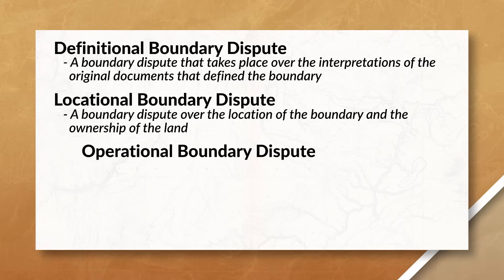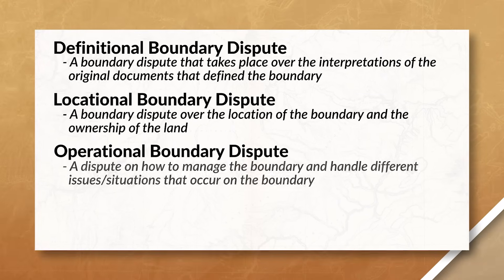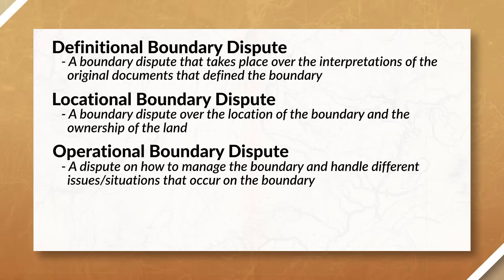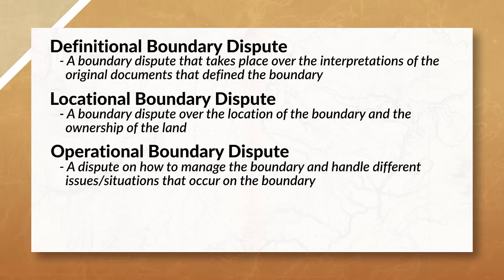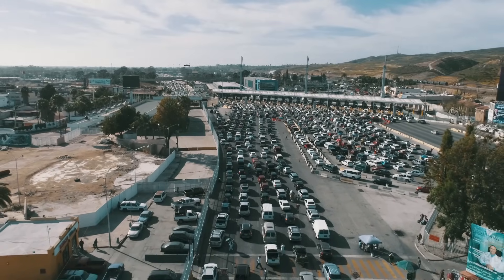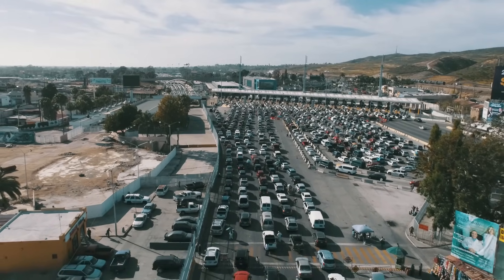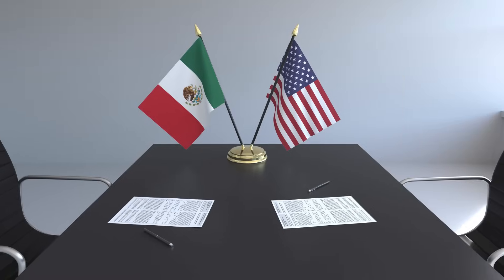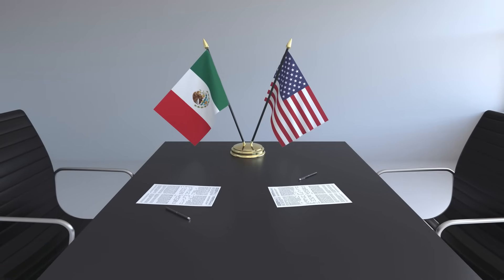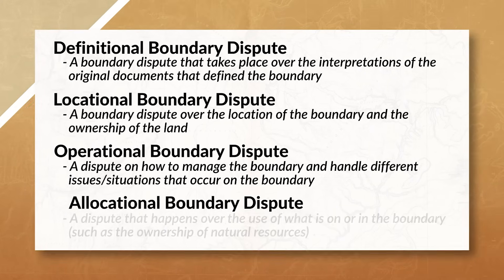The next dispute is an operational boundary dispute, which is a dispute on how to handle a major issue or situation with the boundary. For example, the United States and Mexico both agree where the boundary is between the two countries, but can't agree on how to best handle border crossings. Here the dispute is how to operate, maintain, and control the boundary, not over the boundary itself.